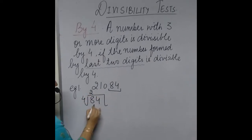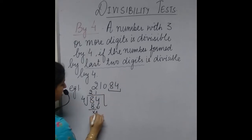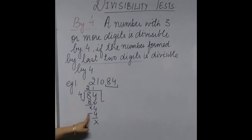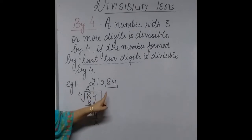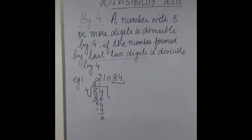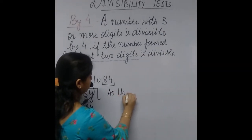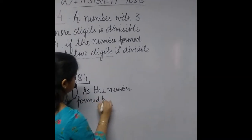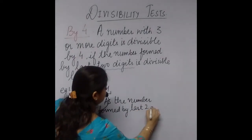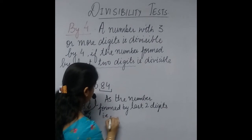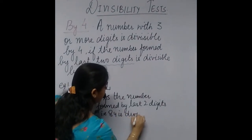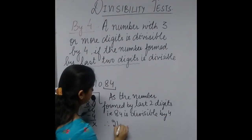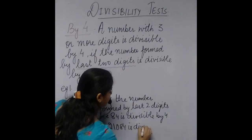Let us check: 84 divided by 4 — 4 twos are 8, and 4 ones are 4, so we have no remainder. Since 84 is divisible by 4, the complete number 21084 is also divisible by 4. The number formed by the last 2 digits, 84, is divisible by 4, therefore 21084 is divisible by 4.